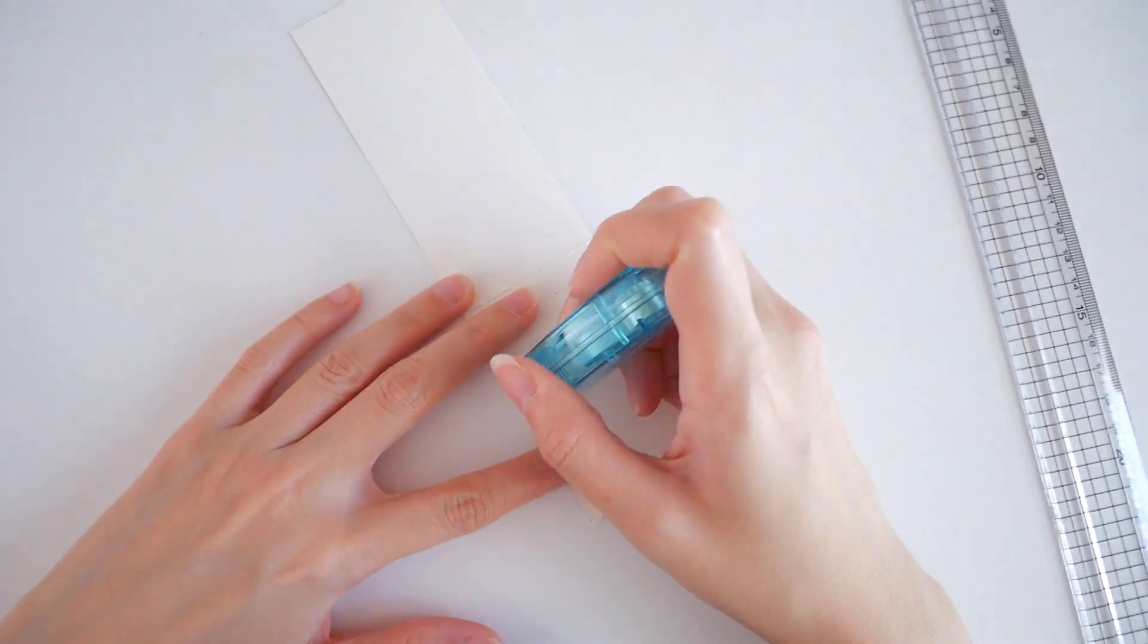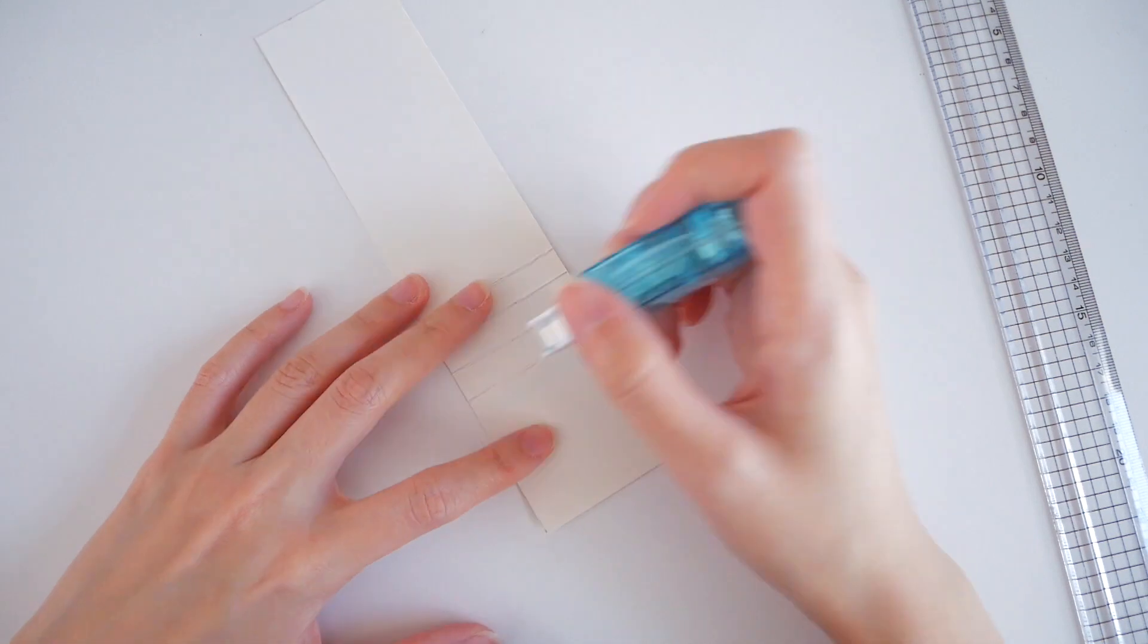Then, apply a thin layer of glue for each square and paste them on one by one.